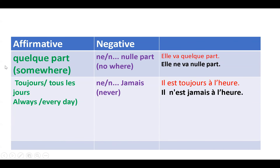When we have 'quelque part' (somewhere), the negation becomes 'nulle part' (nowhere), using 'ne...nulle part.' For example, 'elle va quelque part' — she is going somewhere. Negation: 'elle ne va nulle part' — she is not going anywhere. We use 'nulle part' after the verb. Note: use 'n'' before a vowel.